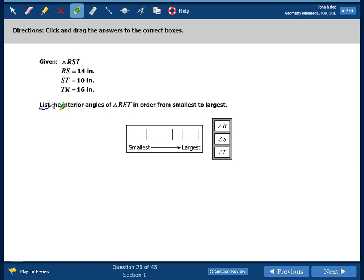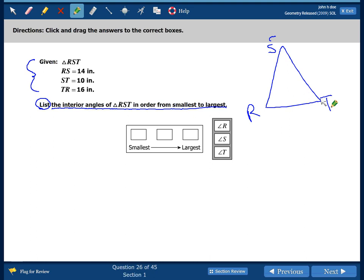We find the keyword to start this problem. List the interior angles of triangle RST from smallest to largest. Well, we have to use this given information here. And since we don't have a triangle, you want to draw one. It's triangle RST. So at all the three corners, or vertices, we write RST. RS is 14, ST is 10, and TR is 16. So we're listing them from smallest to largest. So we find our smallest side. This is our smallest side.